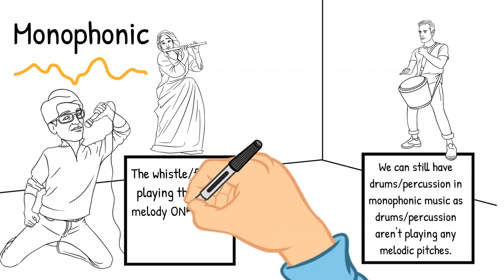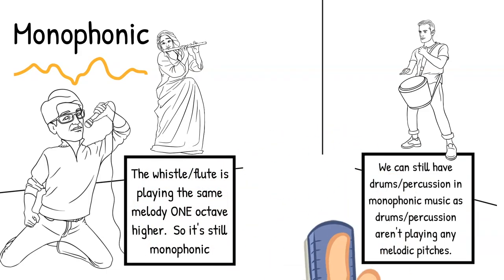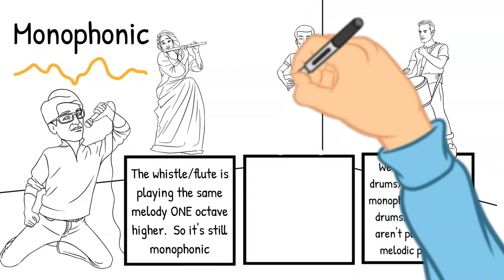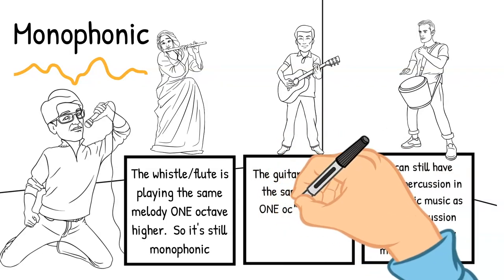And a guitar playing an octave below. Here we are, here we stand. I'm your rock, you're my homeland. It's still the same tune, so it's all monophonic.